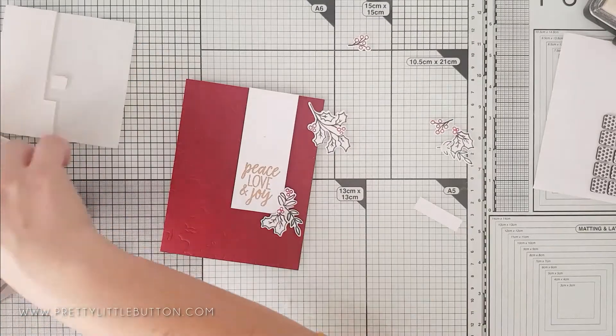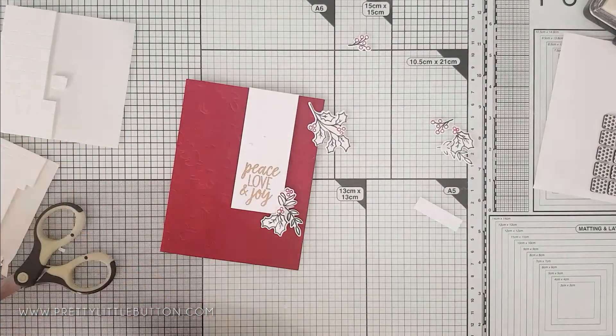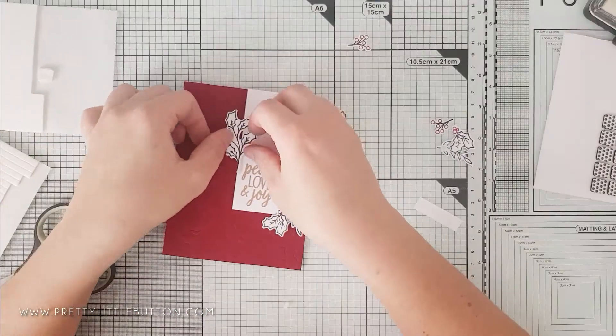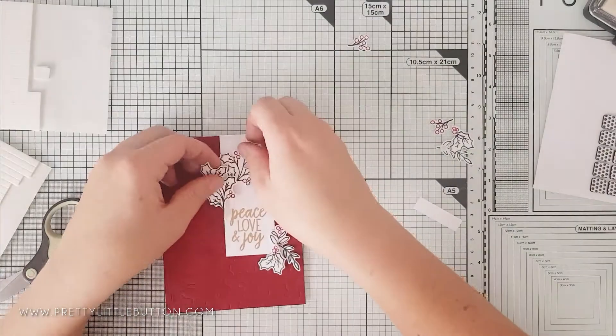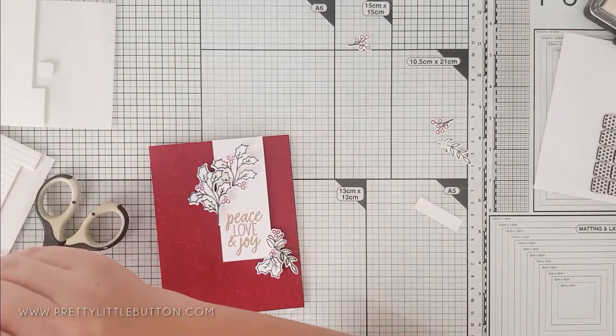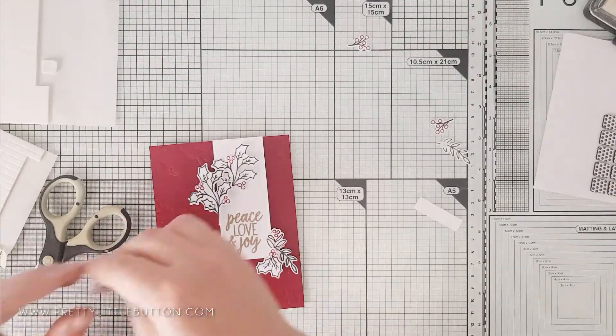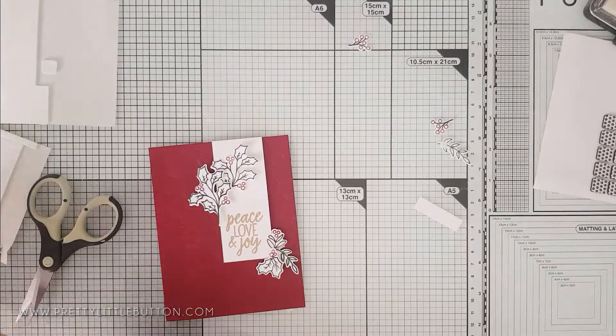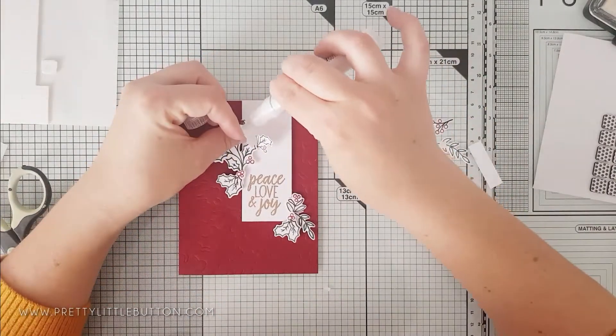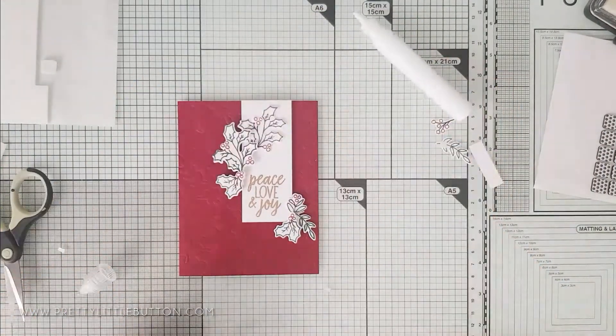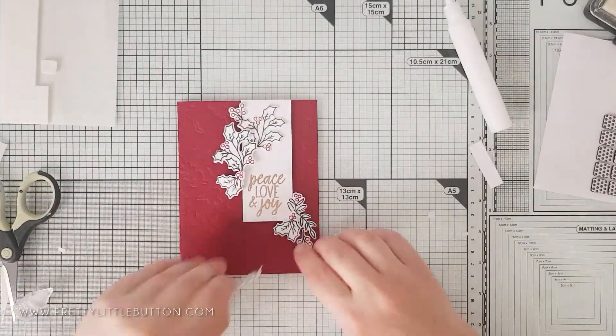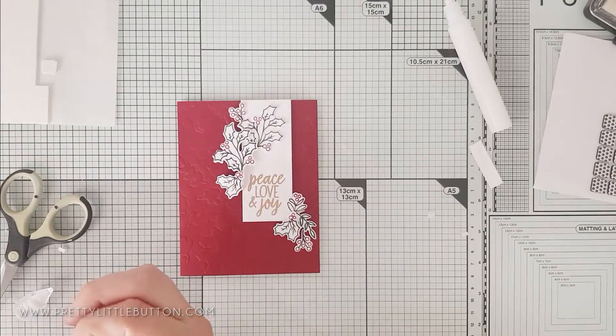I'm starting to cluster all the stamped and die-cut foliage around this sentiment. I'm adding it with foam pads for different layers to create dimension. I'm tucking some of this under the banner and I'm placing some of this over the banner. It's drawing the eye to that focal sentiment. The texture in the background with your partial dry embossing just adds a little bit more interest to the background. So it's not a completely flat red background. I've created a swath around the sentiment, drawing your eye up around the card.